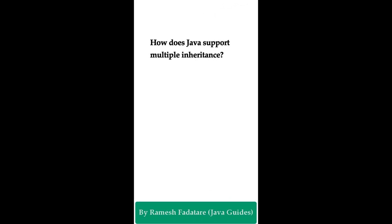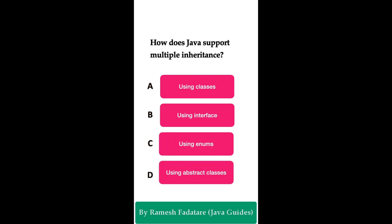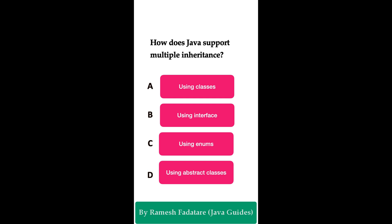Welcome to Java Quiz Series. Here is one more question: How does Java support multiple inheritance? Option A: using classes. Option B: using interfaces. Option C: using enums. Option D: using abstract classes. You have five seconds to answer. The correct answer is using interfaces — Java does not support multiple inheritance through classes.